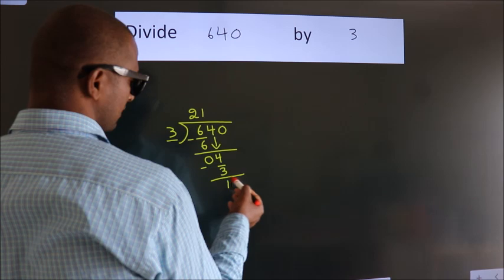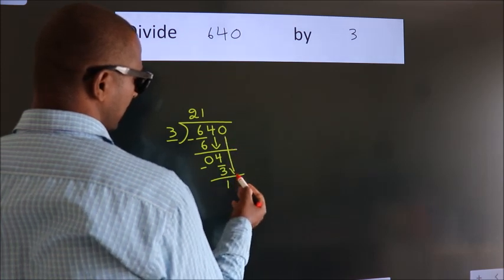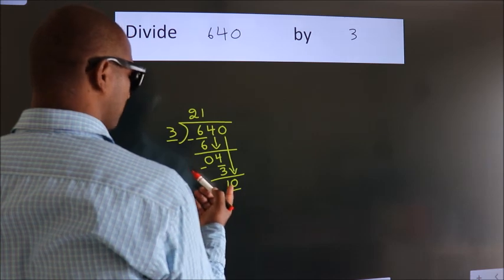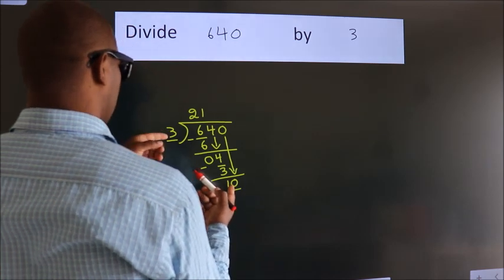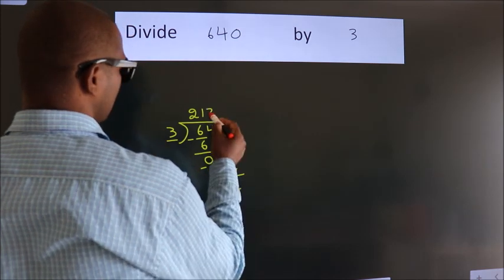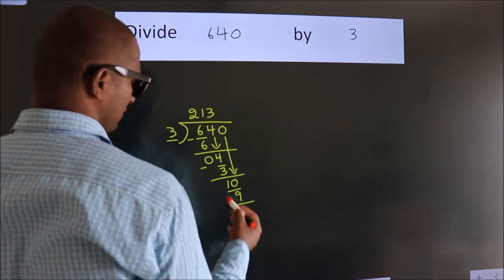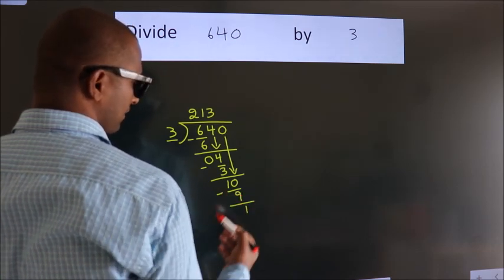After this, bring down the beside number, so 0 down, so 10. A number close to 10 in 3 table is 3 3s, 9. Now, we subtract, we get 1.